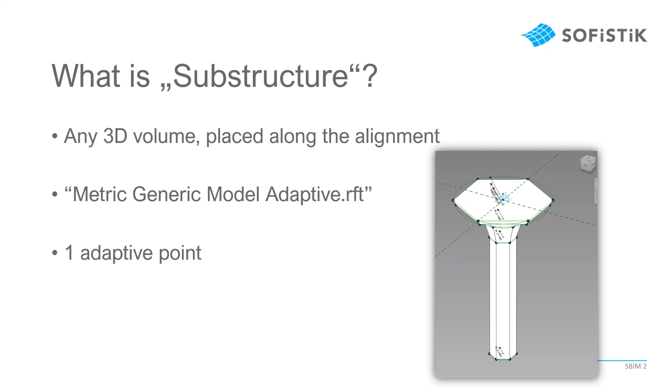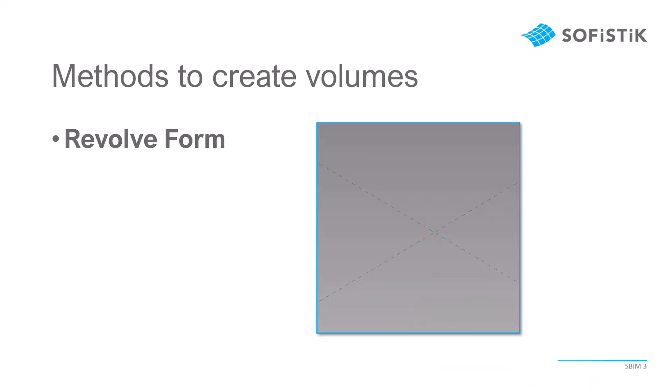Before we can get started with using the tool itself, I want to talk in this tutorial about these very basics for creating those volumes — meaning the Revit basics. Here I have the methods summed up for creating volumes. The first one is the revolve form, meaning a rotation along a separate line.